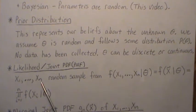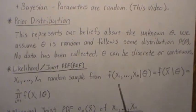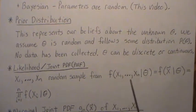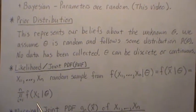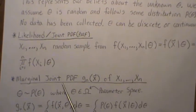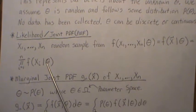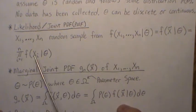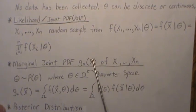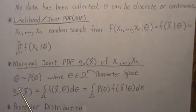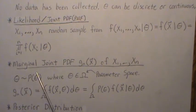The likelihood, or joint probability density or probability mass function, is the mechanism by which we collect the data. We have a random sample from this joint distribution, or likelihood, which in vector form is the product of the marginals since our data are independent. This is dependent upon theta. Remember, the parameter theta is random and follows some sort of distribution, and theta lives in Omega, the parameter space.